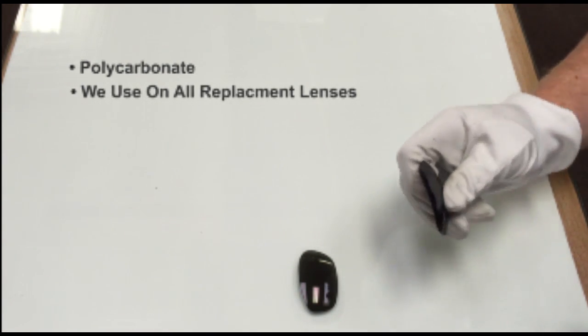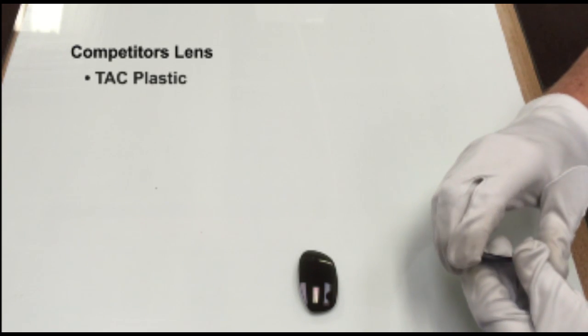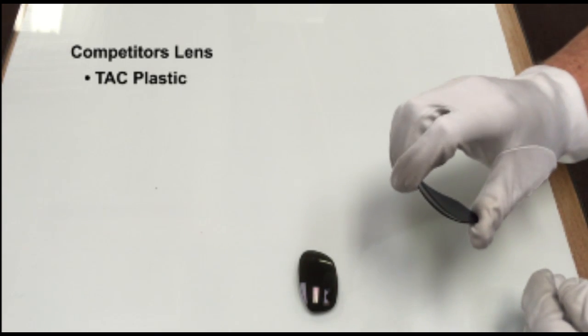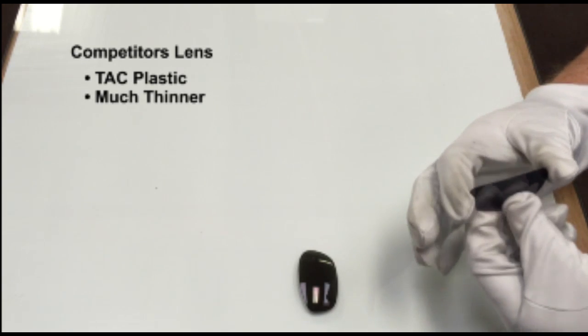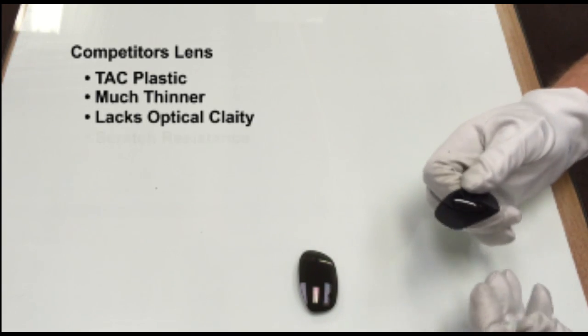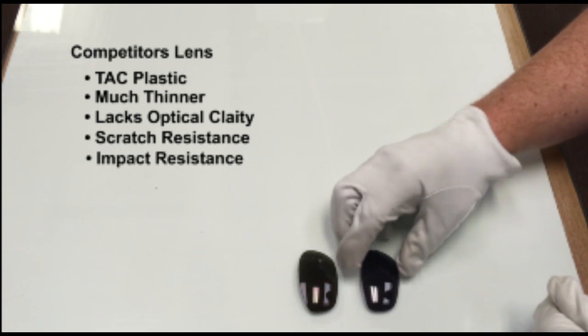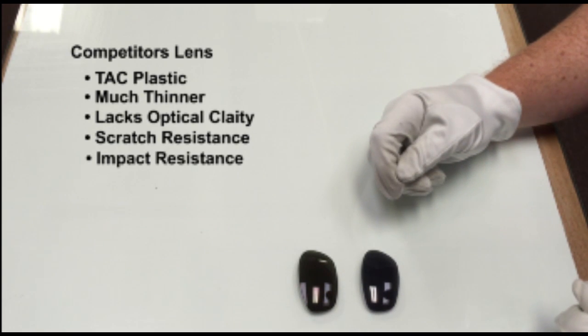This competitor's lens here that we purchased is actually made of TAC. This material is much thinner and lacks the optical clarity, scratch resistance, and impact resistance of the optical grade polycarbonate.